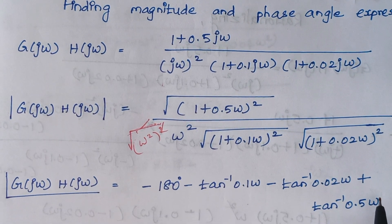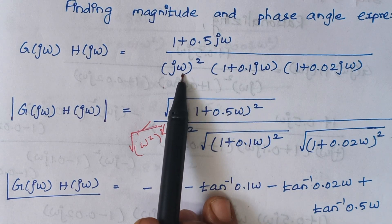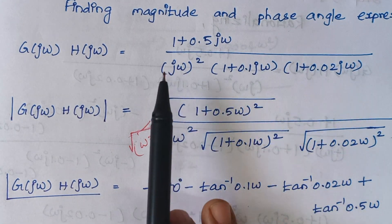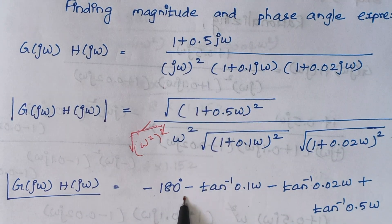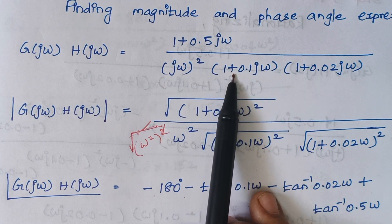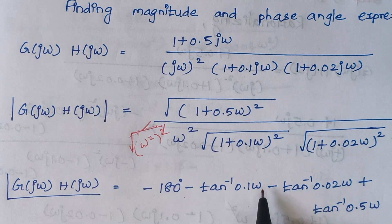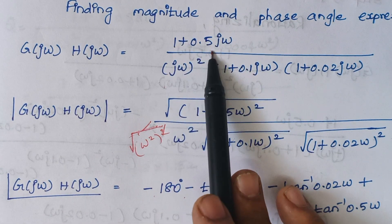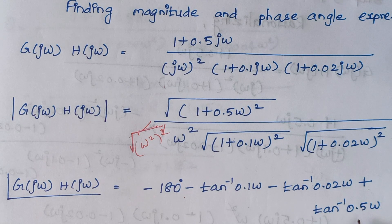For the phase angle: ω² in the denominator contributes −180°. The term (1 + 0.1jω) in the denominator contributes −tan⁻¹(0.1ω), and (1 + 0.02jω) contributes −tan⁻¹(0.02ω). The numerator term (1 + 0.5jω) contributes +tan⁻¹(0.5ω). So the total phase angle is −180° − tan⁻¹(0.1ω) − tan⁻¹(0.02ω) + tan⁻¹(0.5ω).